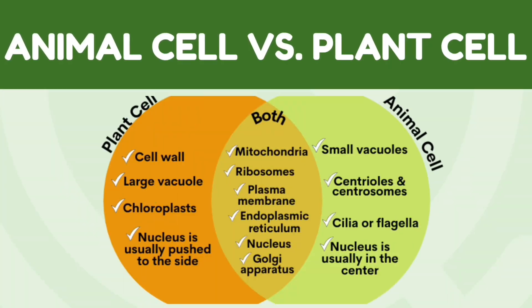As we can see here, we have a Venn diagram that shows the differences between the animal cell and the plant cell. In the middle, we can see their similarities. They both have mitochondria, ribosomes, plasma membrane, endoplasmic reticulum — both rough and smooth — nucleus, and Golgi apparatus.